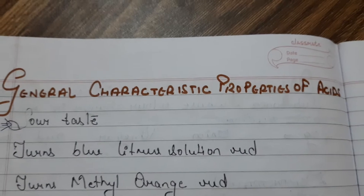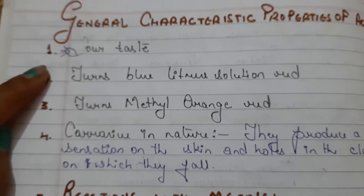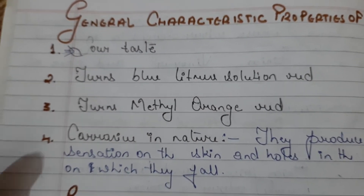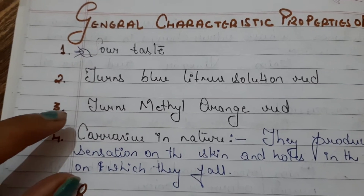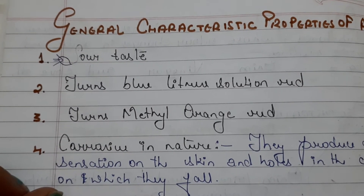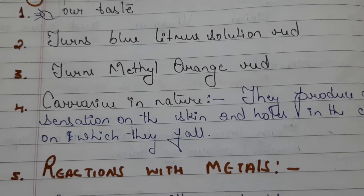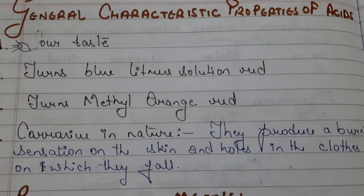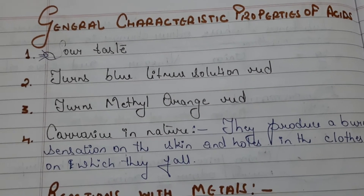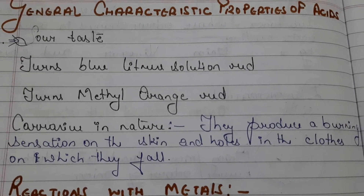The general characteristic properties of acids are: sour taste, they turn blue litmus solution red, they turn methyl orange red, and they are highly corrosive in nature. Acids produce a burning sensation on the skin and can make holes in clothes on which they fall.